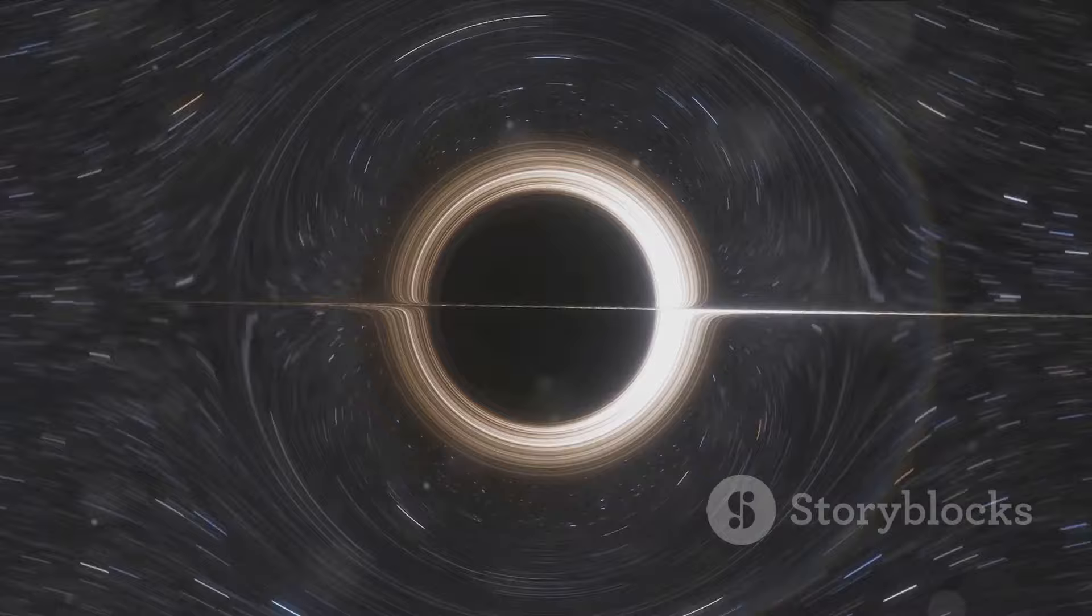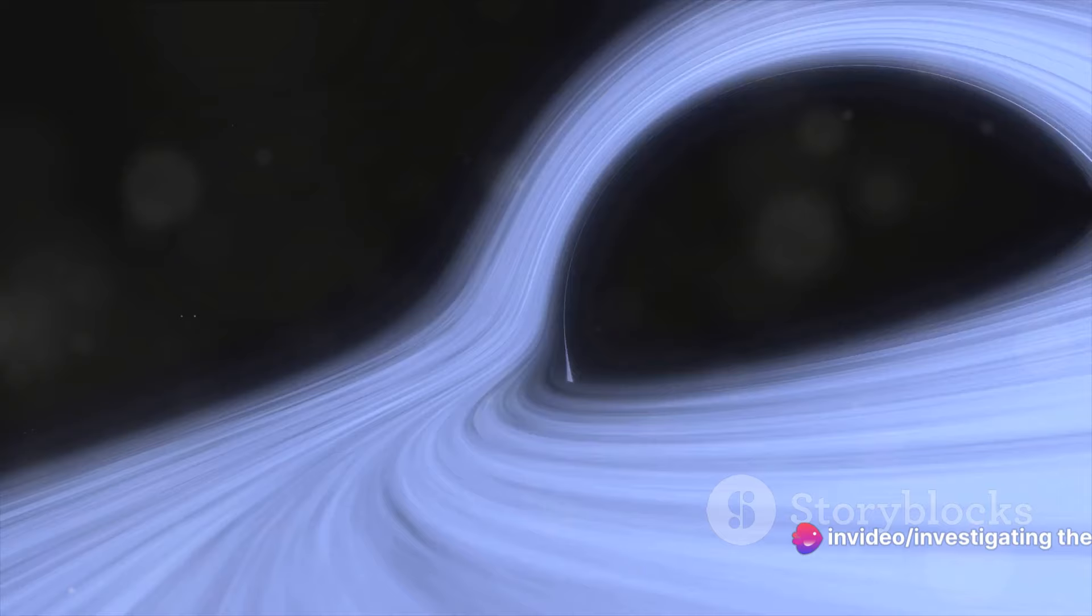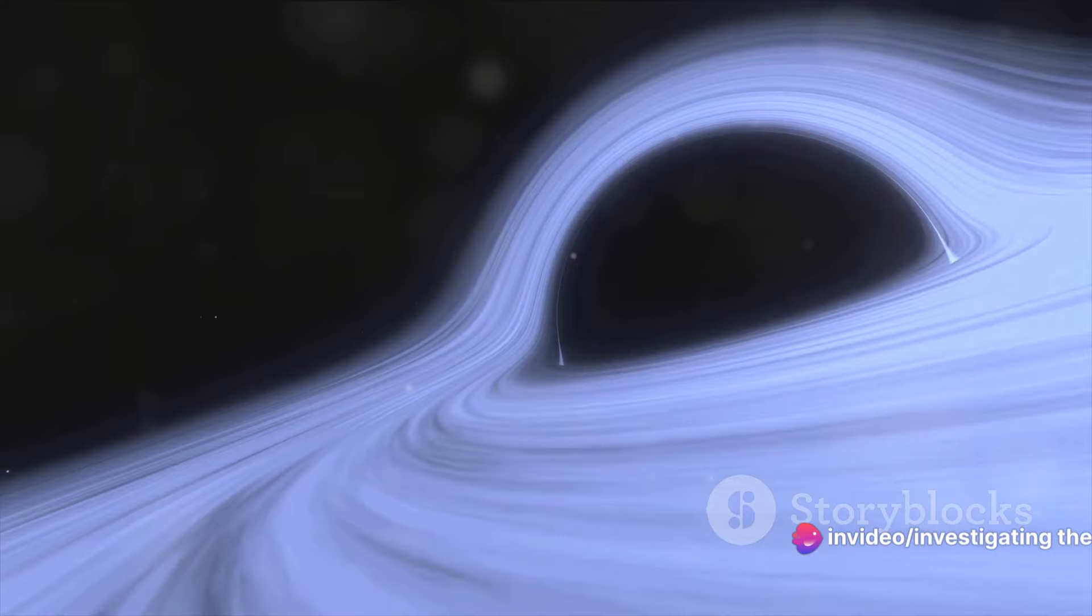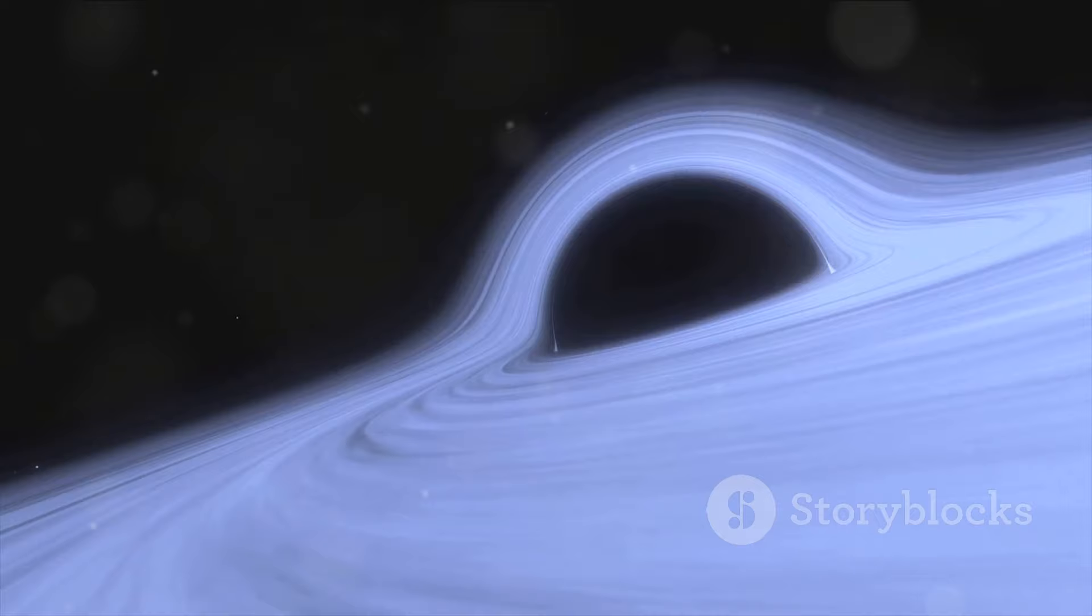We're talking about a time scale so vast, it's difficult to even comprehend. For a black hole with the mass of our sun, we're looking at a lifespan of about 10 to the power of 67 years. That's a 10 followed by 67 zeros.